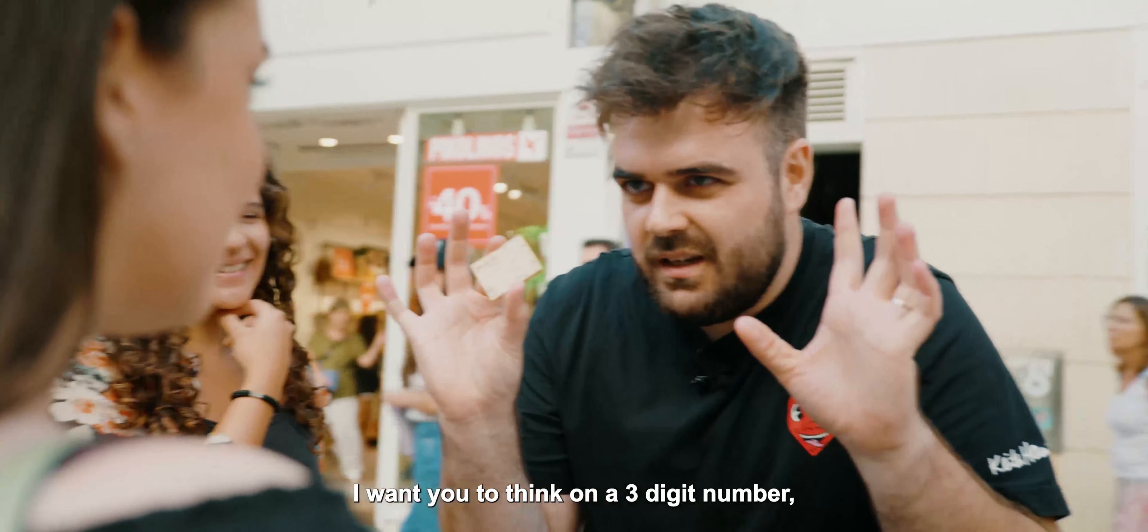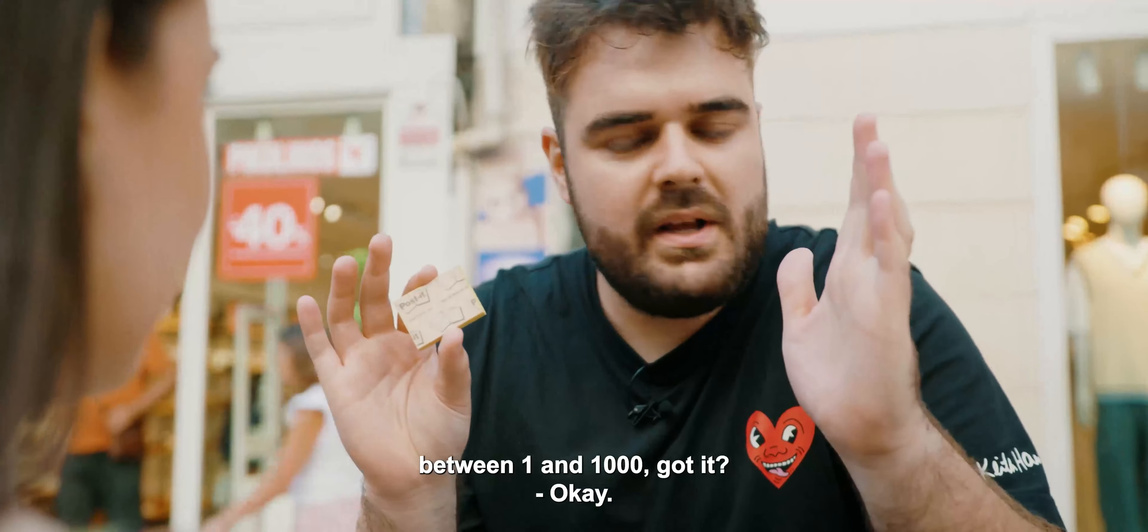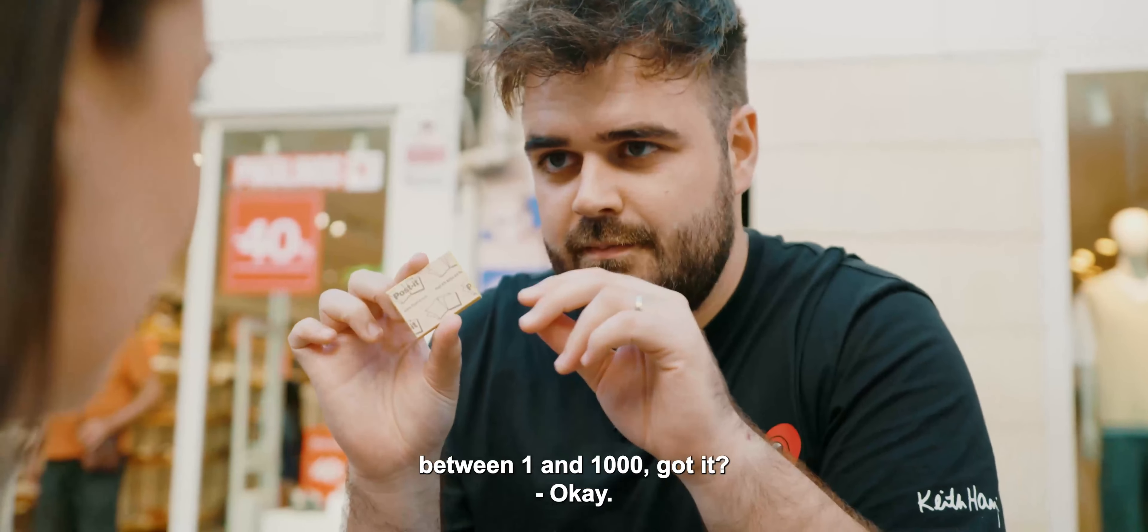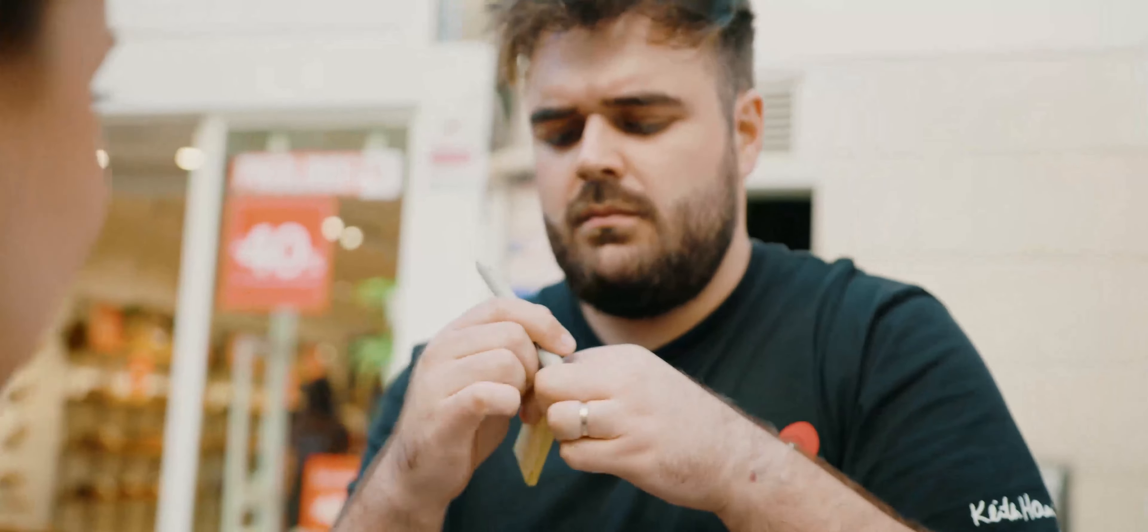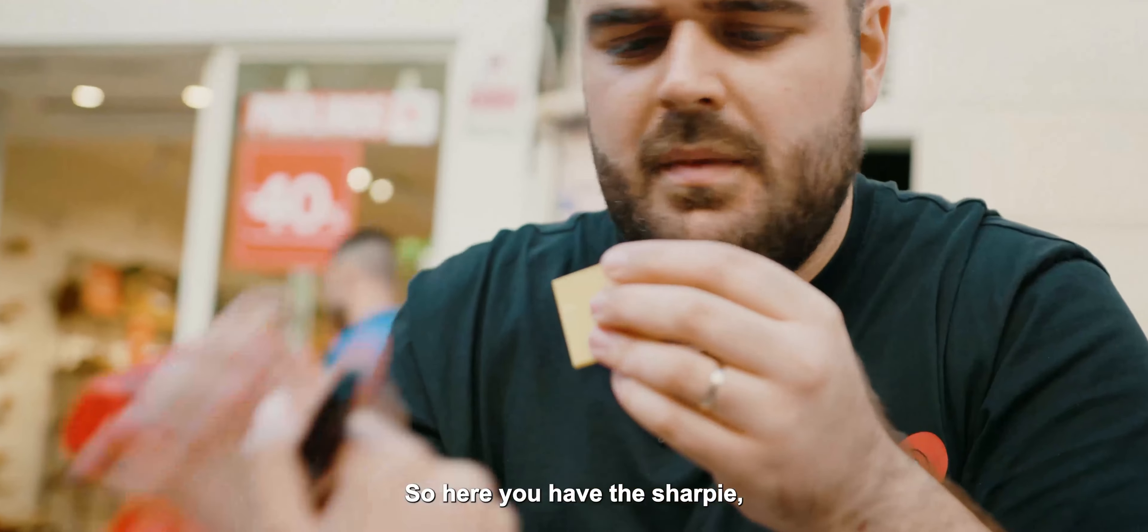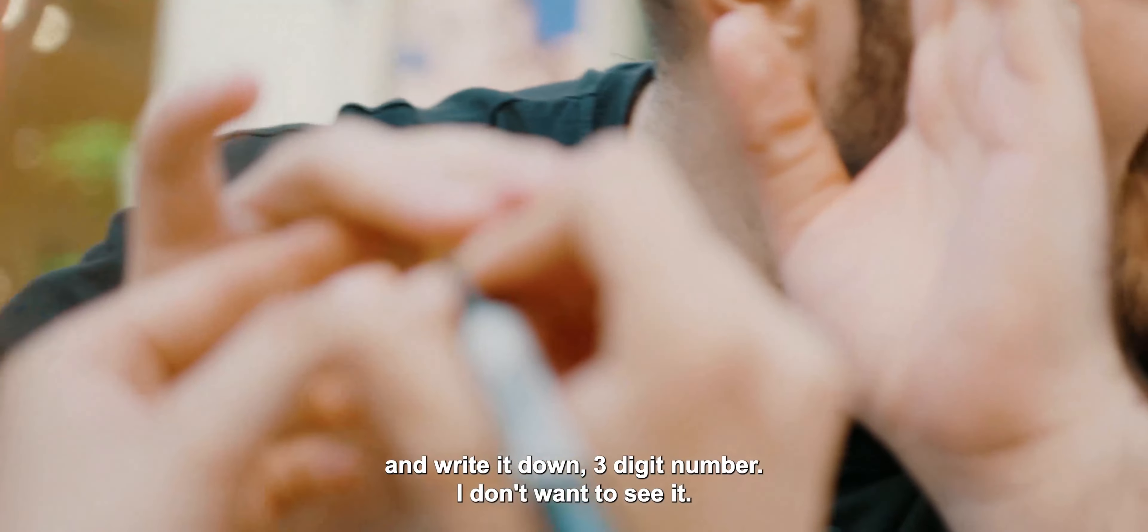I want you to think of a three digit number between one and one thousand. Got it? Okay. I want you to write it down. Here you have the sharpie, write it down. Three digit number. I don't want to see it.